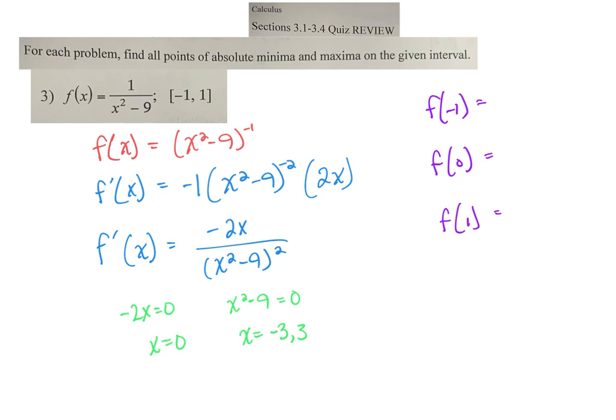When I plug in a negative 1, I get 1 minus 9 on bottom. So I get negative 1/8. When I get 0, I get negative 1/9. And then when I test positive 1, I get negative 1/8. So this would actually be my max, and this would be my min. So I actually have two mins. And they're showing the actual point. So it's negative 1, negative 1/8 as the actual point.